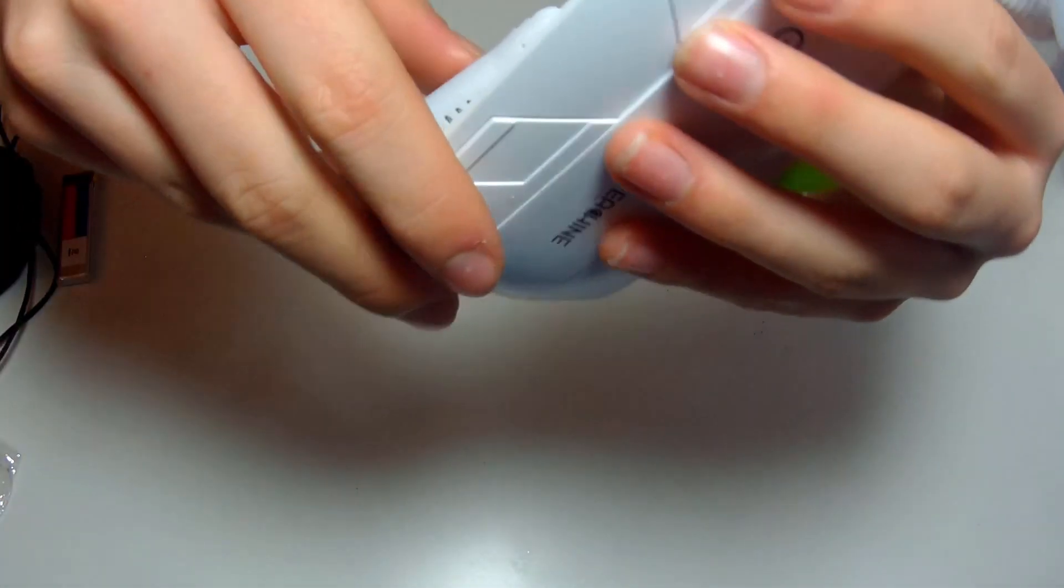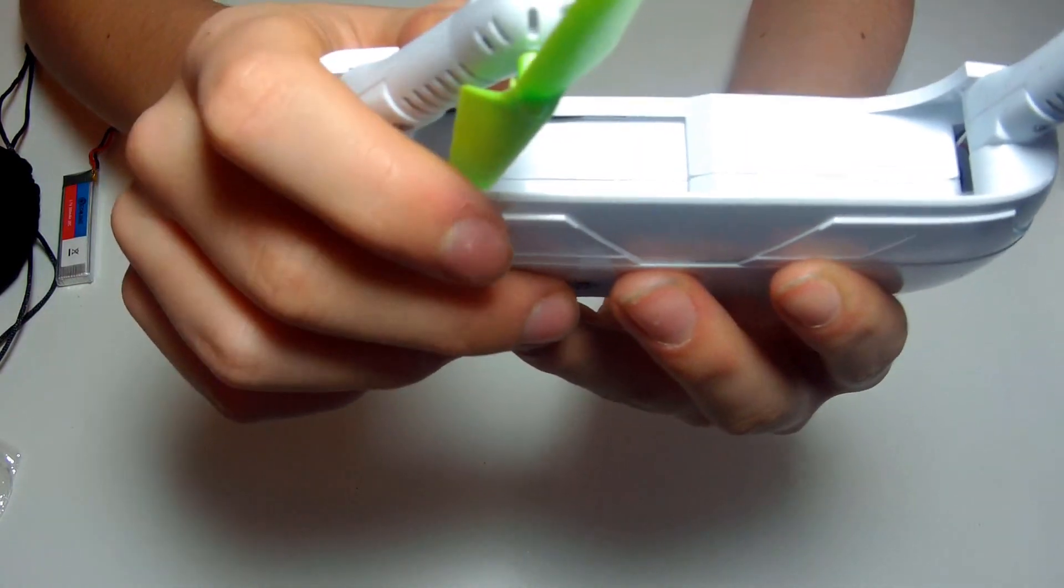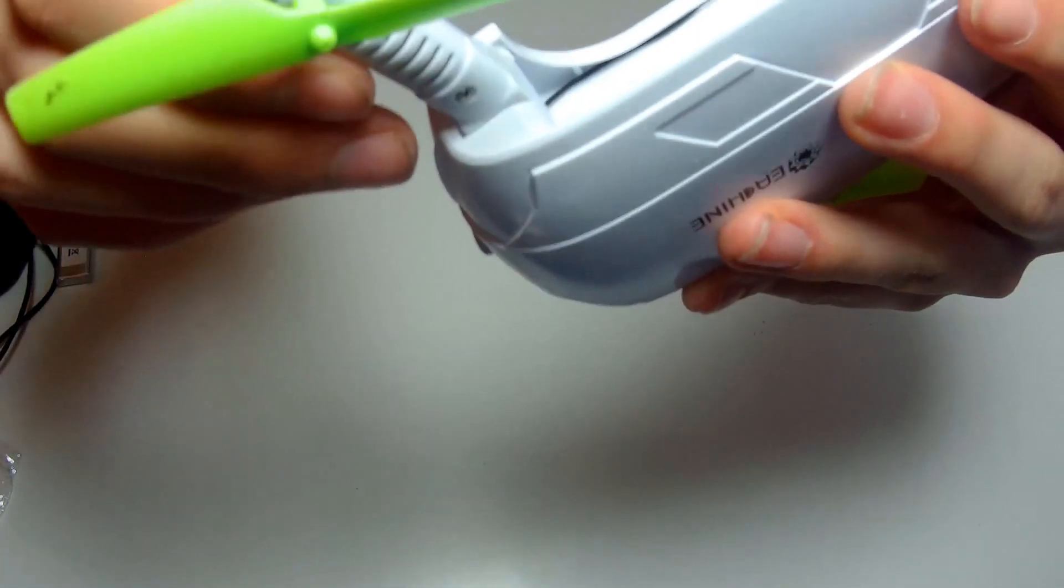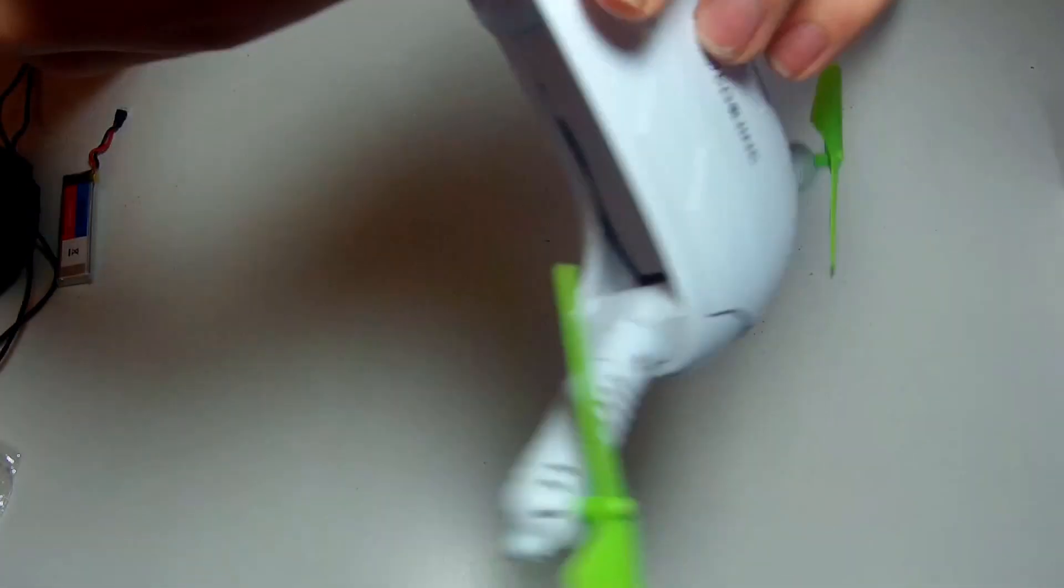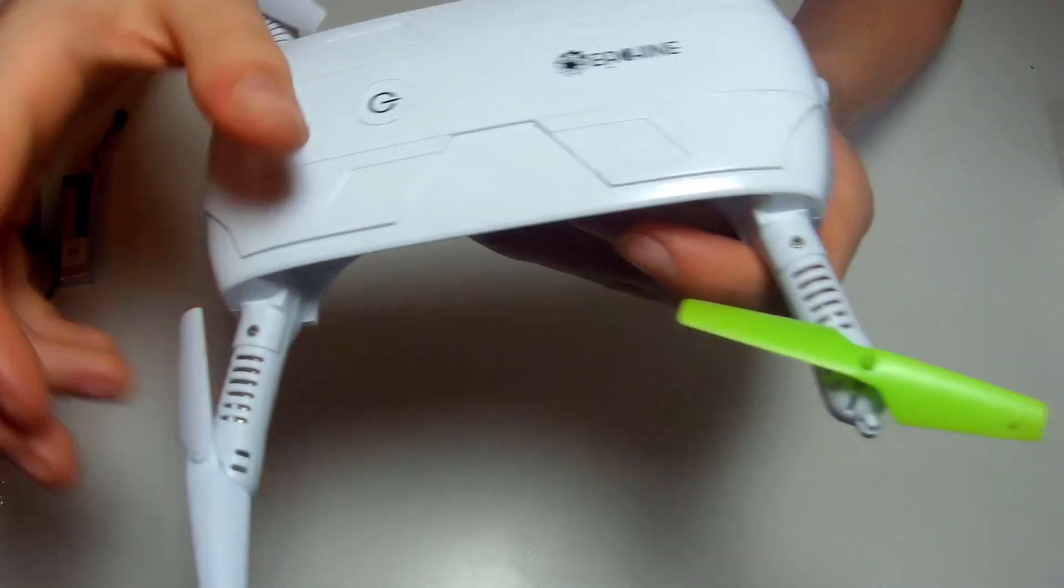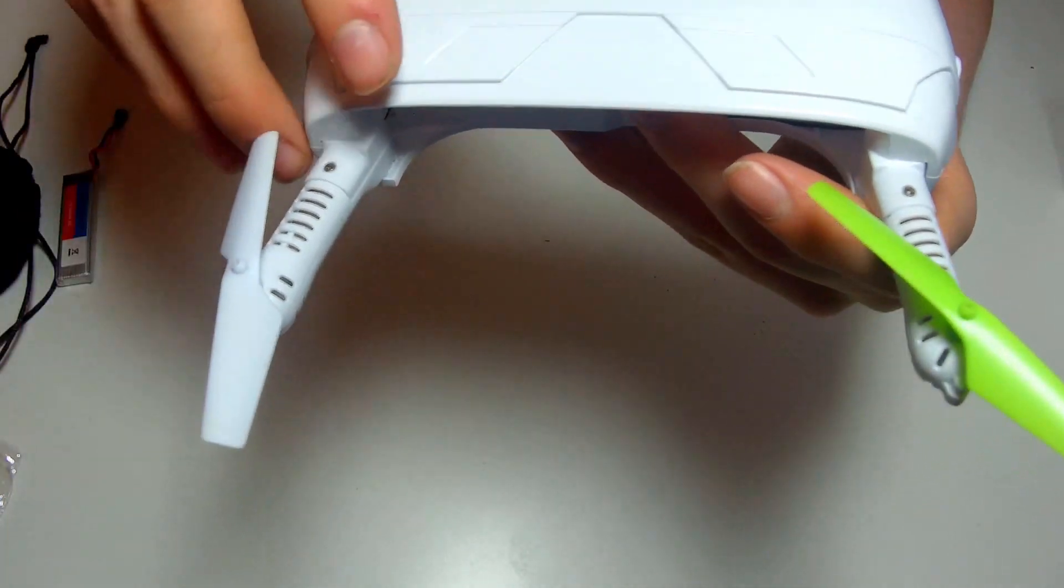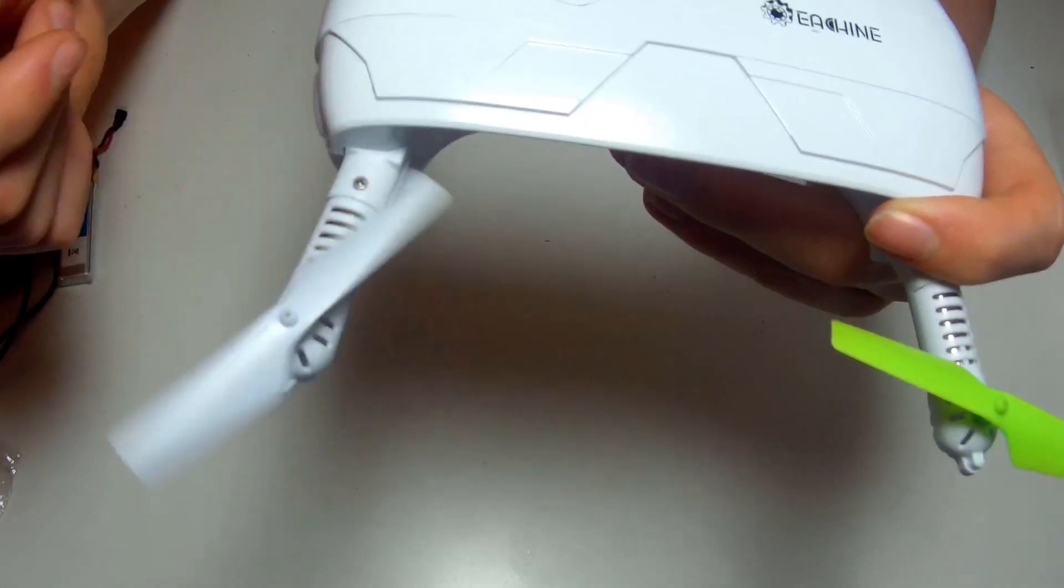Then you've got the folding out arms which have a tactile feel and lock into place. They're pretty sturdy when they're in place. What's a bit of a shame is you get the green props out of the box but you don't get any spare green props, so it's kind of hard to tell which one goes where.